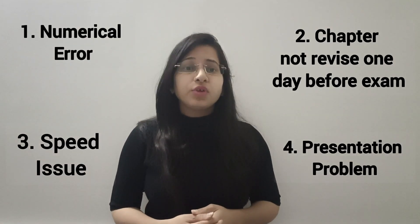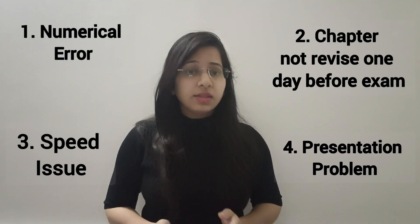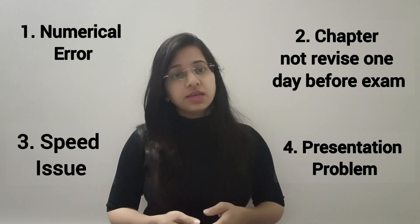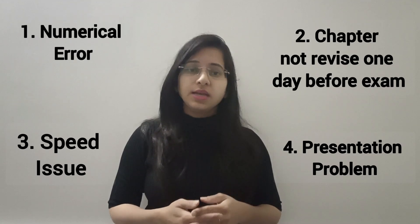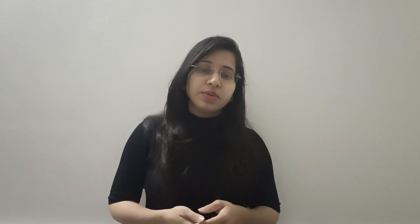One last reason for Category 1 students is the presentation problem. You may have completed the answer, but you have not written it in a proper format, or you have not included what the institute expects. This is also a main reason for less marks. Students who have 50-60 marks do not need to change their entire study strategy — only attending to 3-4 points can help them score exemptions.